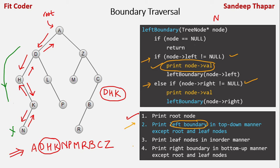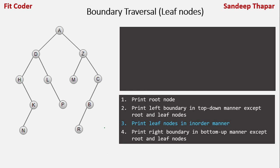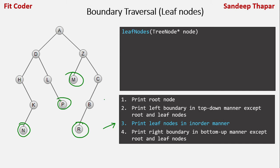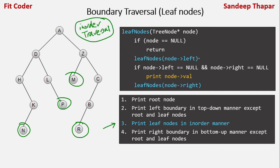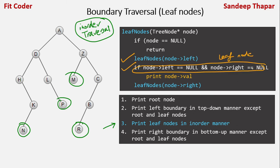Now for the third step, we print the leaf nodes in in-order manner. The leaf nodes are N, P, M, and R. This is a simple in-order traversal: we go left, and when printing we check if both left and right are null — if so, it's a leaf and we print it. For nodes N, P, M, and R this condition is true and they are printed.